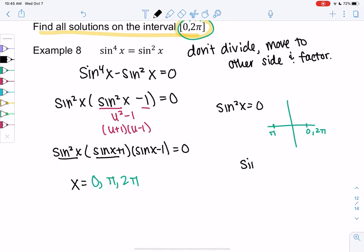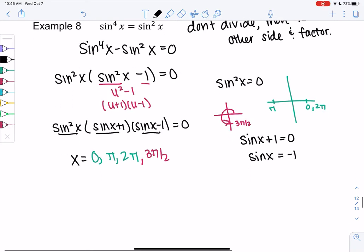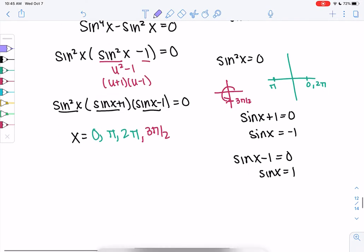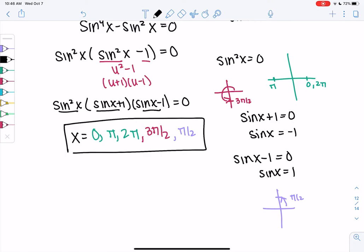Sine of x plus 1 equals 0, which means sine of x equals negative 1. Where does that happen? It's the y value, so that would be 3π over 2. All right, and last one. Sine of x minus 1 equals 0. So sine of x equals 1. And that would just be up here, which is π over 2. And so those are my solutions in the interval from 0 to 2π.